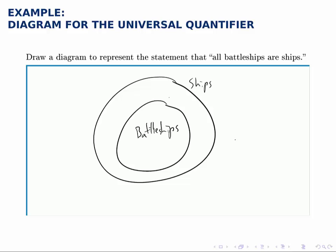Notice that anything inside the battleship circle must also be inside the ship circle. It's not true that all ships are battleships because there are some ships out here that are not battleships. But all battleships are ships because that circle is completely contained within the other.